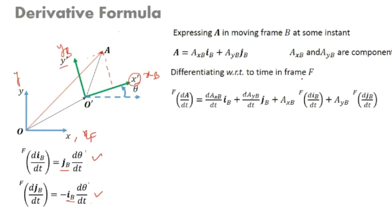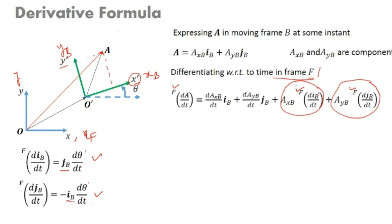Now we differentiate this with respect to time in F frame. d A by dt in F frame gives: d AXB/dt times IB plus d AYB/dt times JB plus AXB times d IB/dt in fixed frame plus AYB times d JB/dt in fixed frame. Because we are taking the time derivative in the fixed frame, the unit vector derivatives are non-zero. If we differentiate with respect to B frame, these would be zero; otherwise they are non-zero.